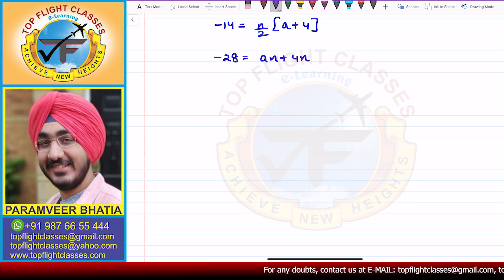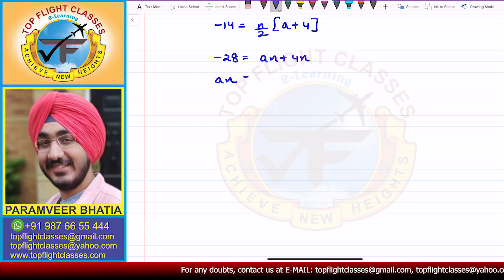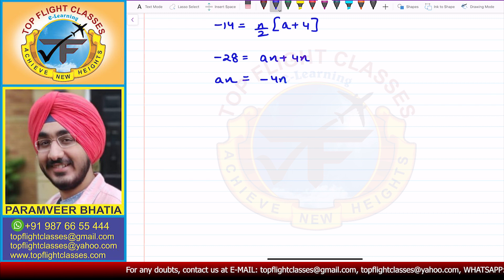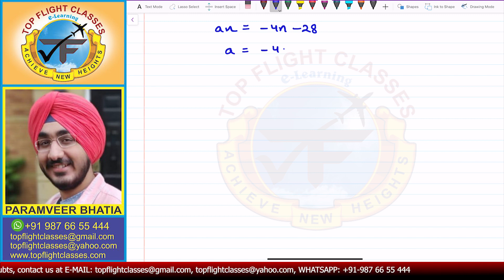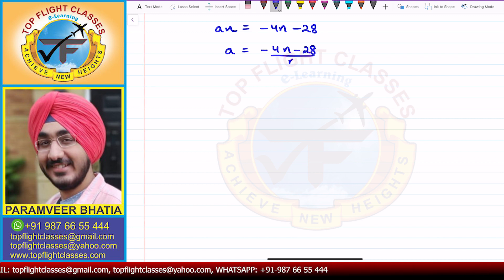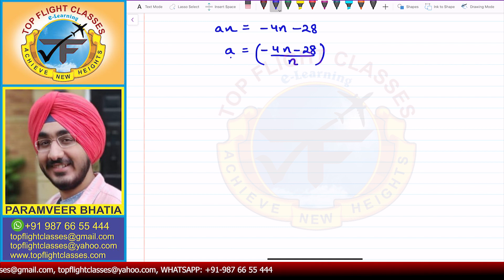From here, what I get is that An is equal to minus 4N minus 28, and from here I get that A is equal to minus 4N minus 28 divided by N. Let us say that this is the first equation.